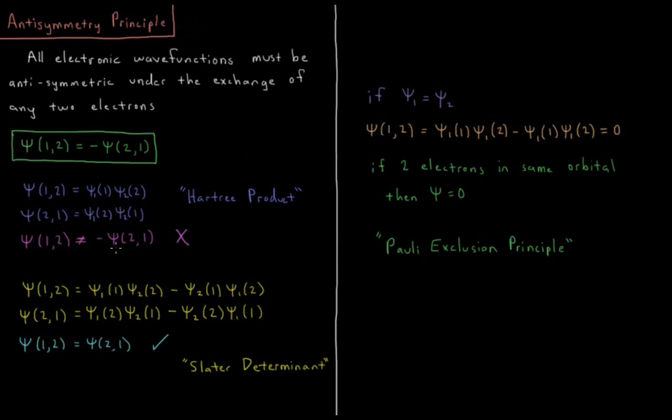So what do we have to do instead? We can force our wave function to be antisymmetric by construction. Let's take a wave function like this. Let's say we have Psi(1,2). This is going to equal Psi1 of electron1 times Psi2 of electron2 minus orbital 2 with electron1 times orbital 1 with electron2.